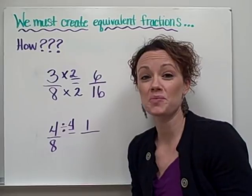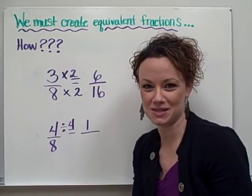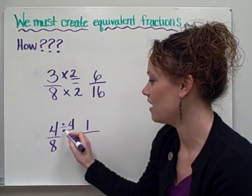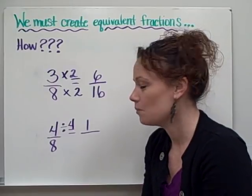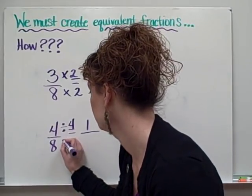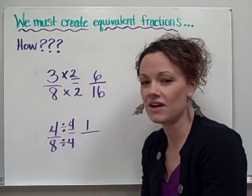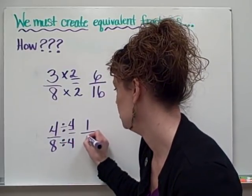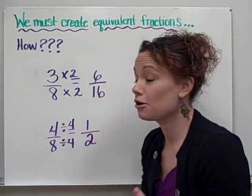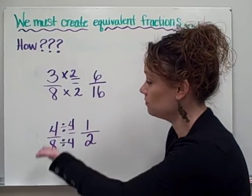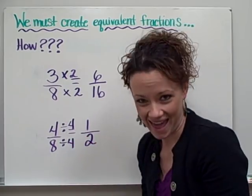And as the rule stated before, whatever you do to one number, you must do to the other. So if we divide the numerator by 4, we must divide the denominator by 4 as well. And 8 divided by 4 equals 2. So I've now created an equivalent fraction that shows 4 eighths is equivalent to 1 half.